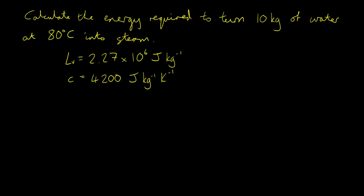Here's a slightly more difficult problem. Calculate the energy required to turn 10 kilograms of water at 80 degrees Celsius into steam. We've been given the specific latent heat of vaporization and the specific heat capacity for water. We need to divide this problem into two parts: first, the energy to raise the temperature from 80°C to 100°C, then the energy to turn that water into steam.